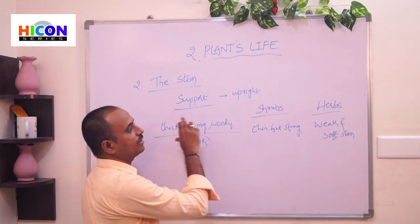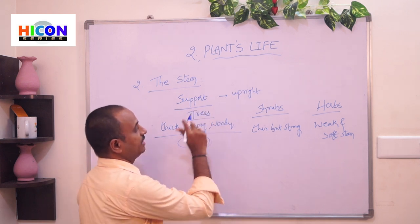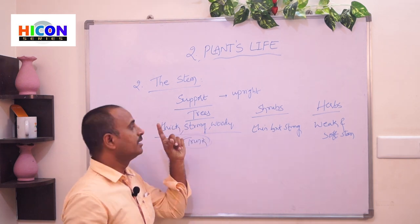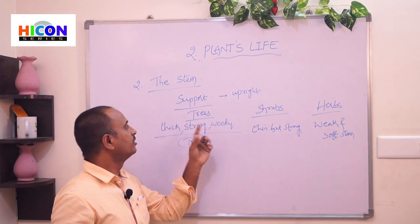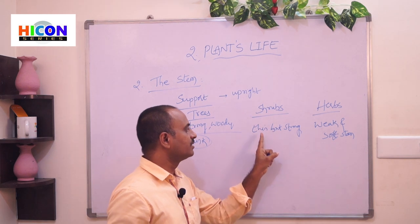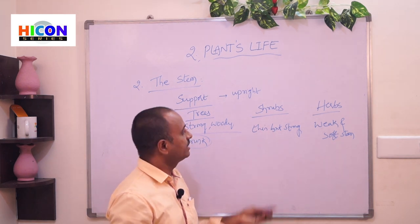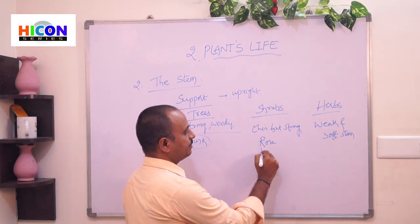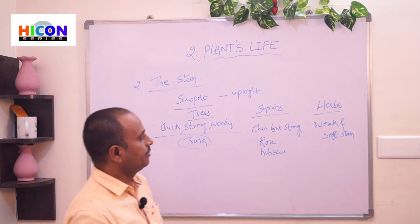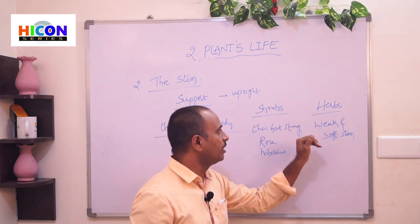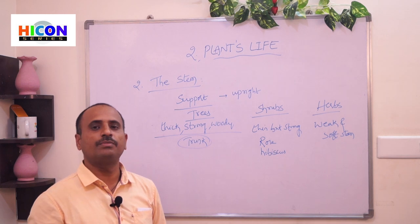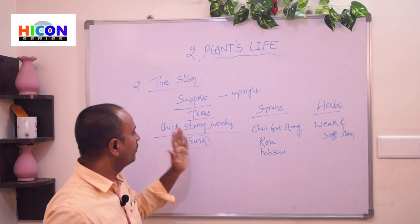These are the different types of plants and the different types of stems they have. Big plants called trees have a thick, strong, woody stem called a trunk. Small plants called shrubs have a thin but strong stem — examples: rose plant, hibiscus. Very small plants called herbs have a soft and weak stem and grow with the help of a support.